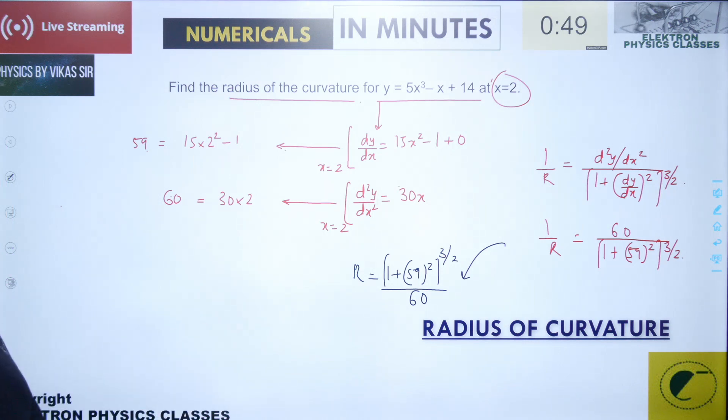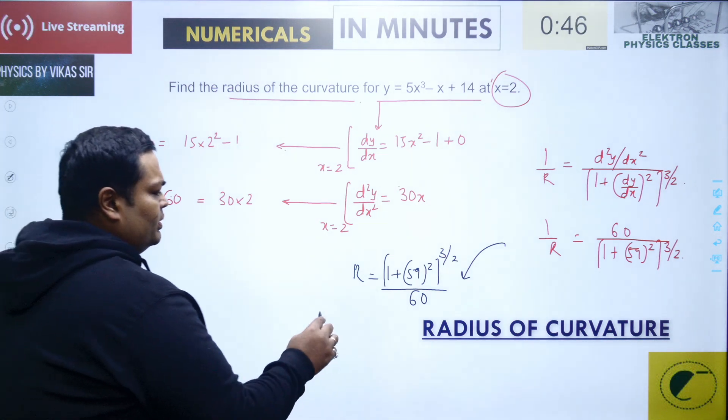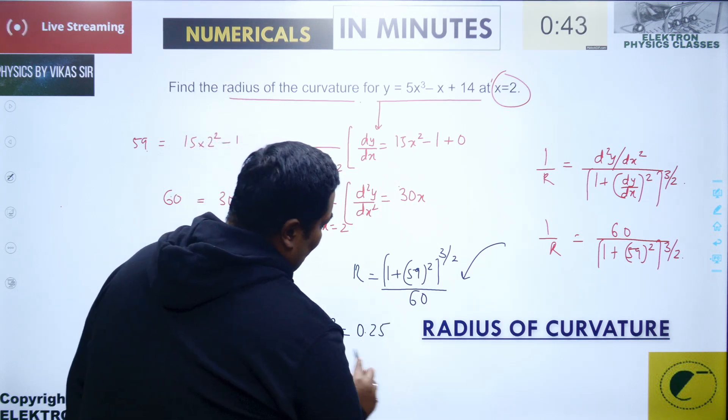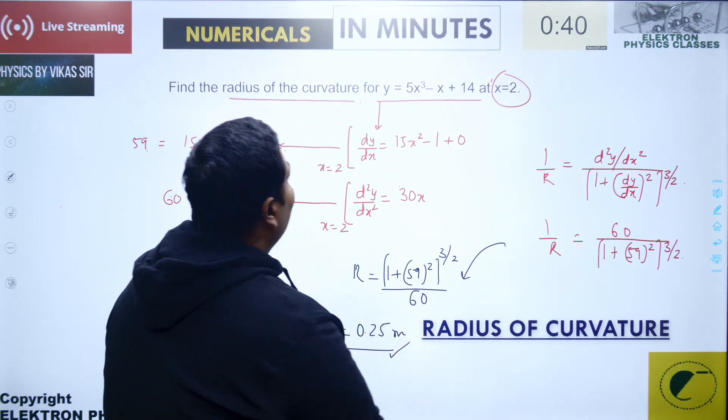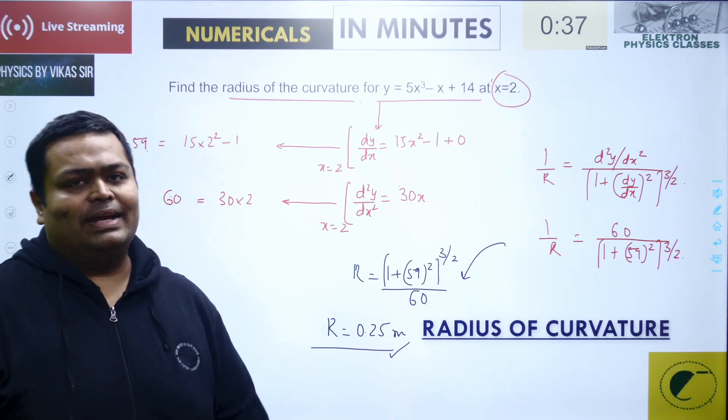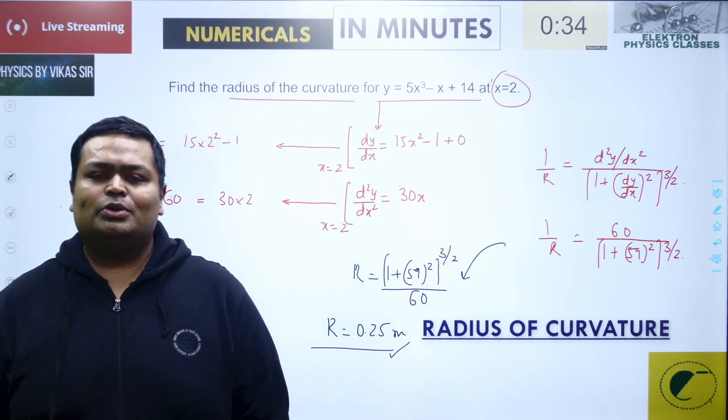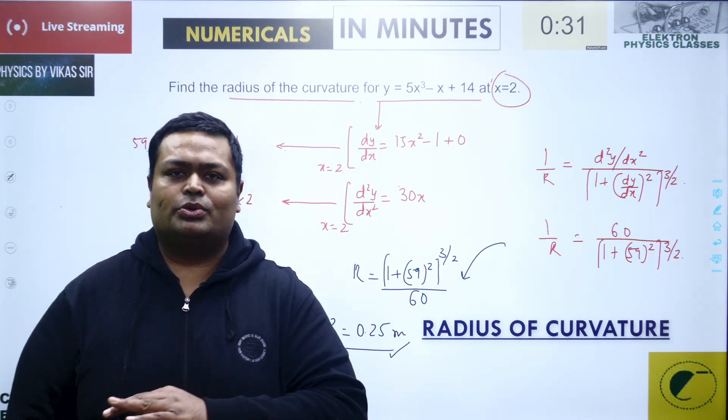You just need to evaluate this particular value. On evaluation, you will get this particular value around 0.25. That will be the radius of curvature in meters if the question says x and y is in meters. Hopefully you understood the question very well. Thank you, I will be coming back with more such questions.